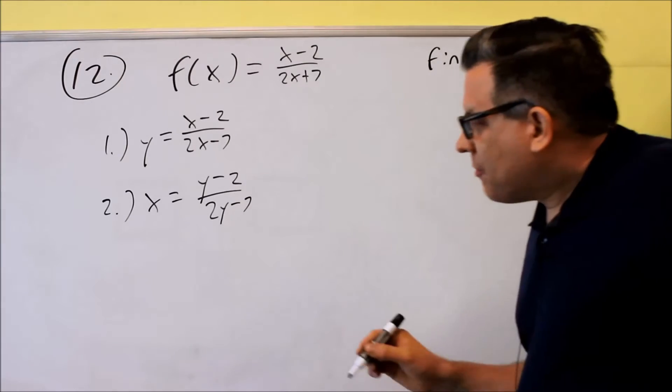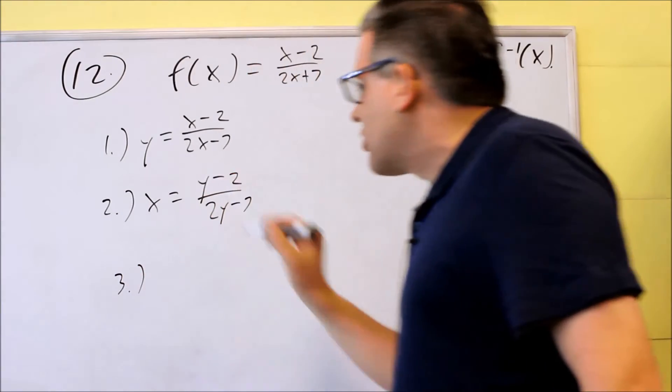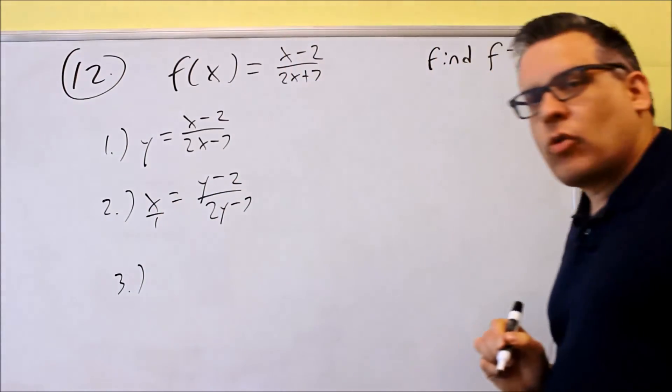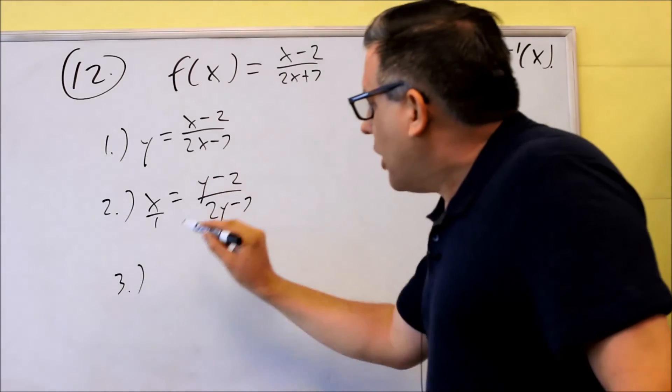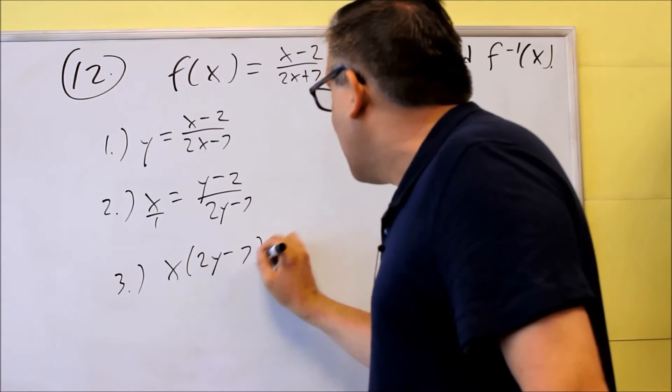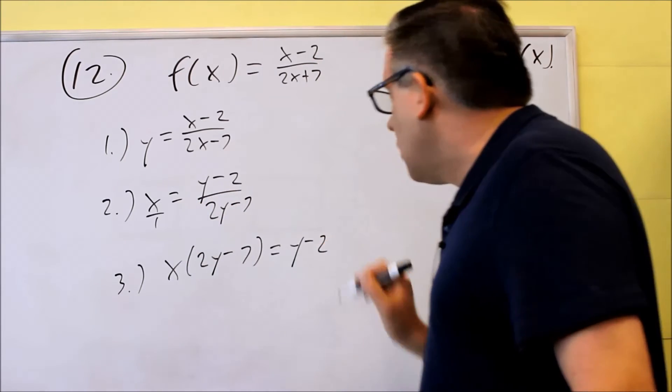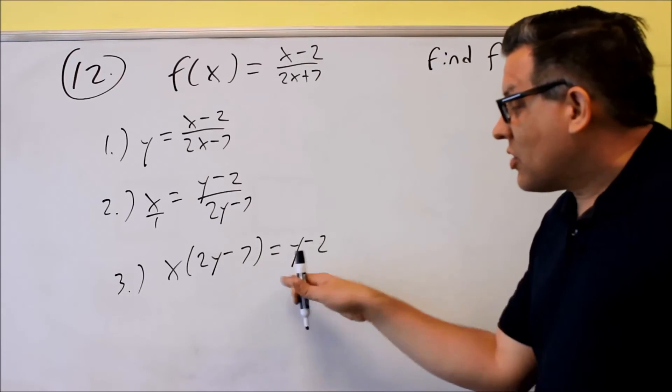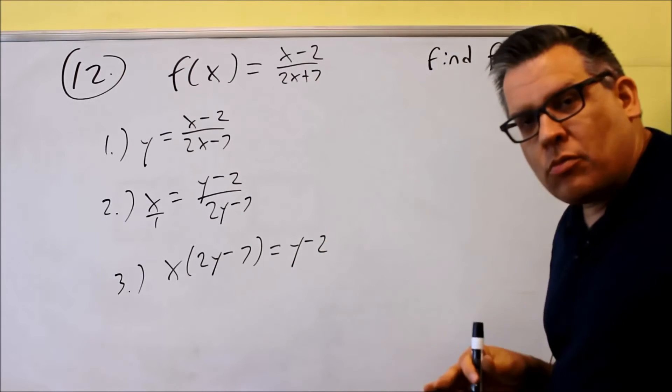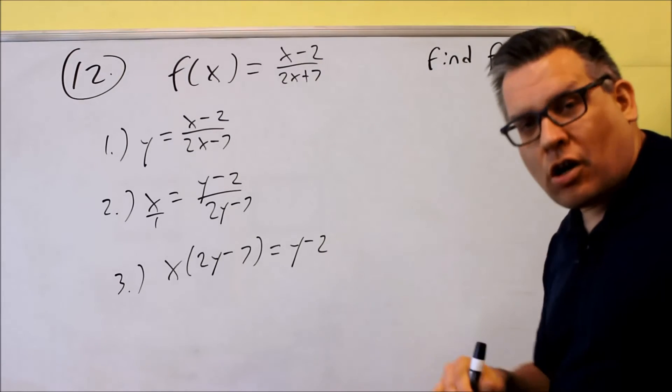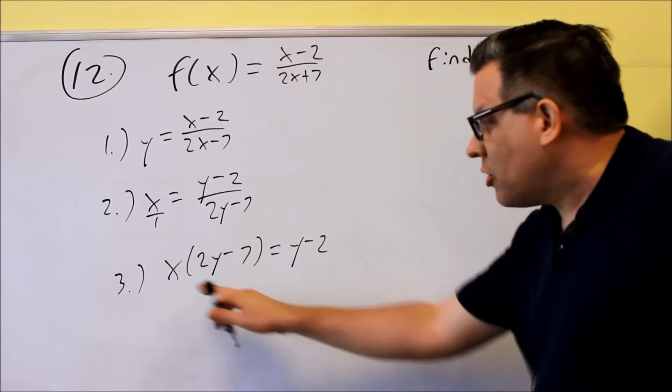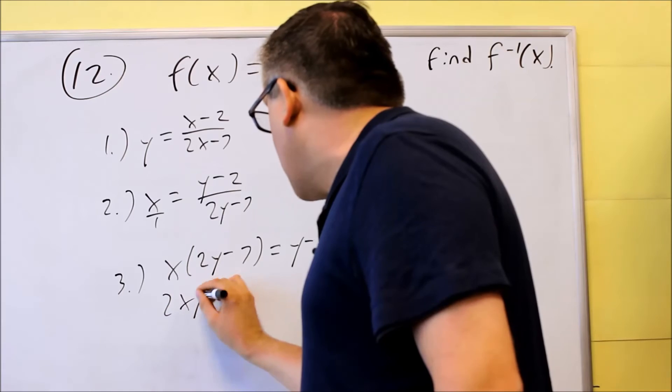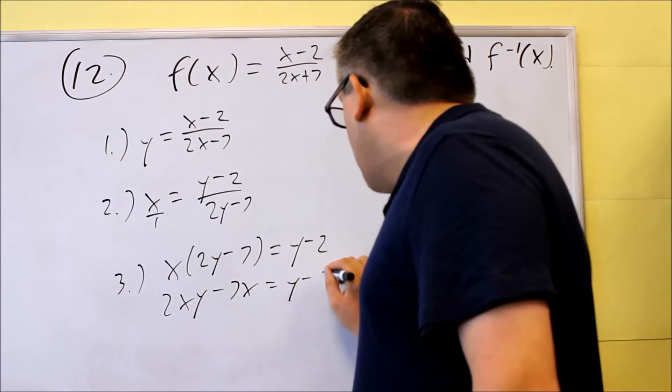Now step 3, we have to solve for y. To do that, the first thing you want to do for something like this is get rid of the fraction. I'll write that x over 1, and I'm going to do my cross-multiplying method. So x times 2y minus 7, that's going to equal 1 times y minus 2. The idea here is since I have two y's, I want to get both of them to the same side of the equation. That way I can factor out a y and I can solve for the problem. So now that I have it in this form, I'll multiply by x. I get 2xy minus 7x is going to equal y minus 2.